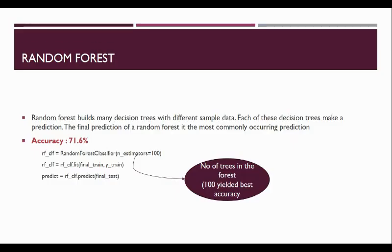Then, we went on to try the random forest algorithm. So, what random forest does is it creates many decision trees using different sample data, and each of these decision trees make a prediction, and the final prediction of a random forest is the most commonly occurring prediction. We got an accuracy of 71.6% using a random forest that had 100 decision trees, and that was the best accuracy that we could get. Now, Priya will be talking about the rest of the models.